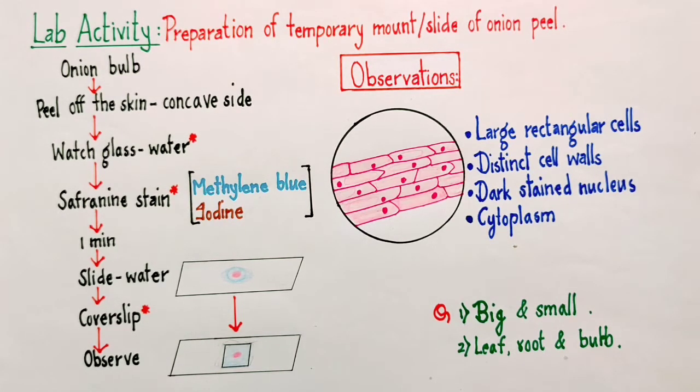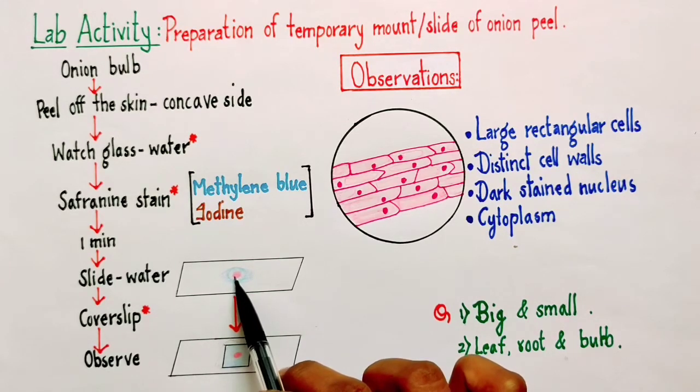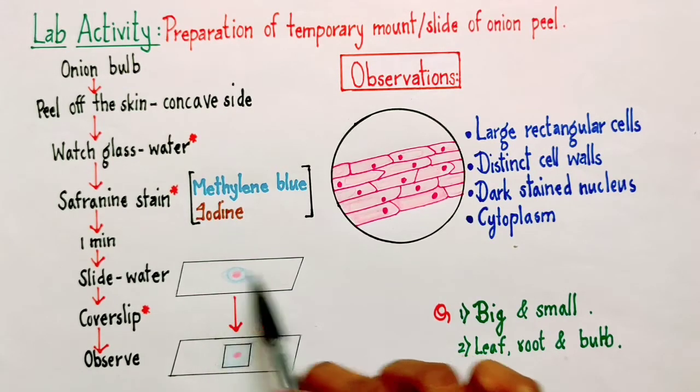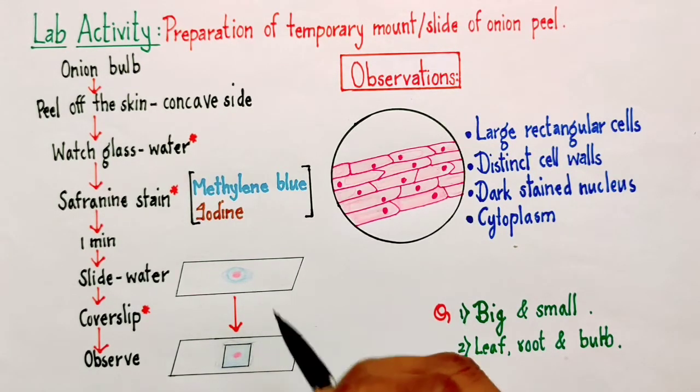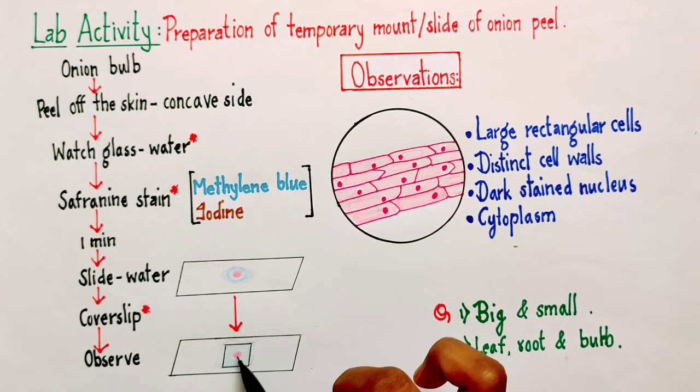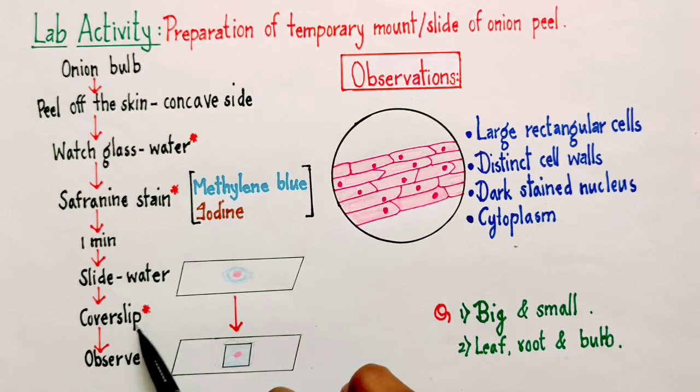The third important thing is that this cover slip also helps to maintain the position of this onion specimen. The sample is on water, so there is a great chance that it will move this side, that side, making our focusing difficult. The sample will be held at a proper place by this cover slip. These are the three important things why we have to use this cover slip.